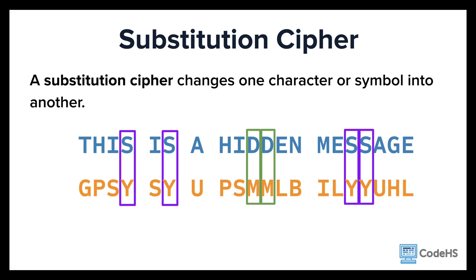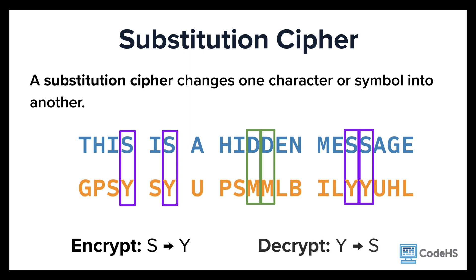This is symmetric encryption. If you know the key for each character — such as s turns into y — then you would just reverse that process to decipher the code back to the original message and change all y's back to s's.